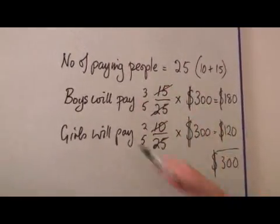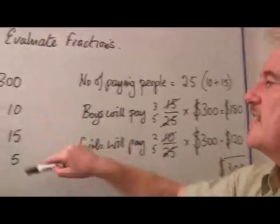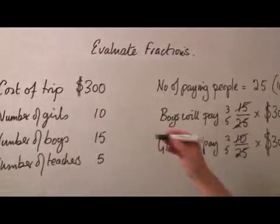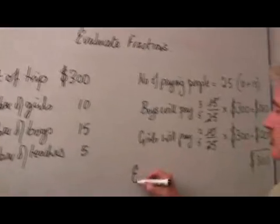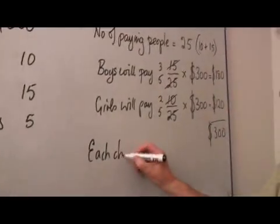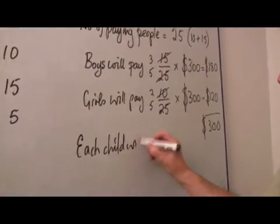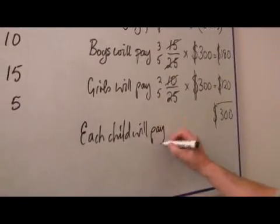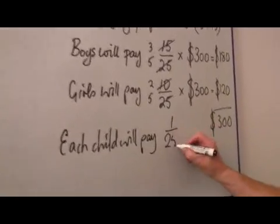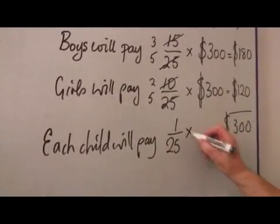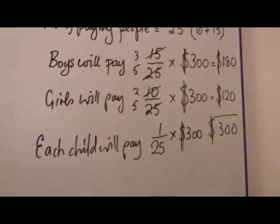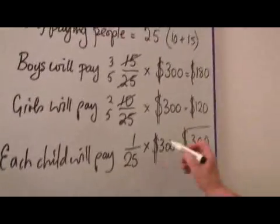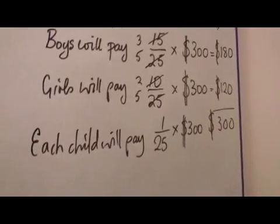But when you're working with fractions, you can use this to work out any fraction you wish. Paid by each child, each child will pay 1 25th of $300. And that's in fact $12.